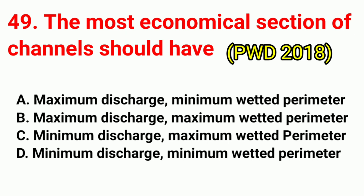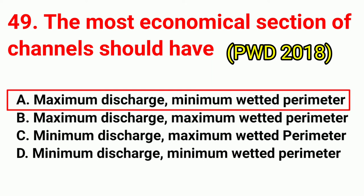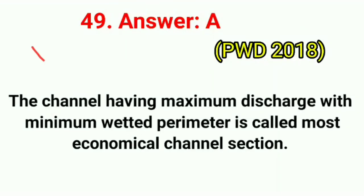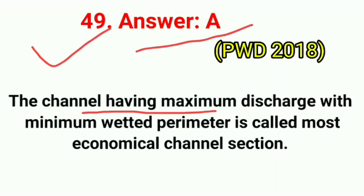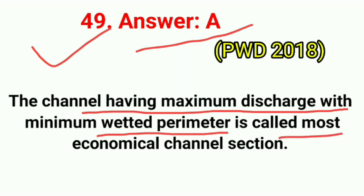Question No. 49. The most economical section of a channel should have? Correct answer is option A: maximum discharge with minimum wetted perimeter. The channel having maximum discharge with minimum wetted perimeter is called the most economical channel section.